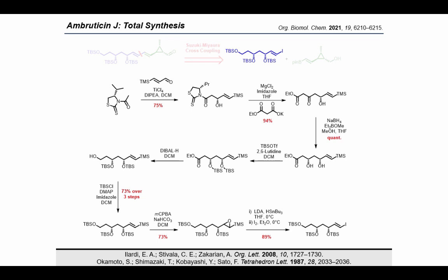After bashing our heads against the wall for some time, we finally found some conditions developed by Sato which cleanly converted the vinyl silane to the vinyl iodide in two steps, affording the desired product as a single isomer. For me, I found this step particularly interesting. It's proposed that ring opening of the epoxy silane by lithium tributyltin affords this intermediate, which can undergo Peterson olefination and subsequent tin-iodine exchange.